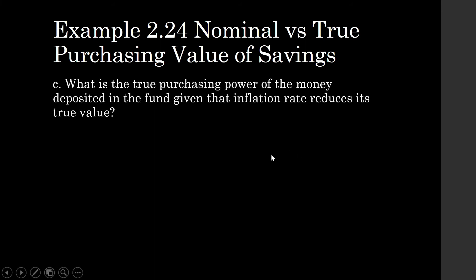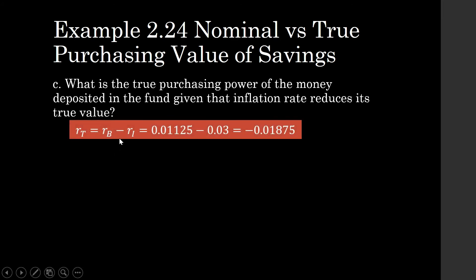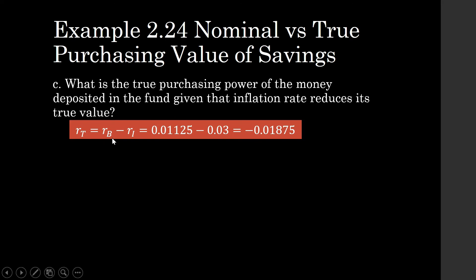What is the true purchasing power of the money deposited in the fund, given that the inflation rate reduces its true value? We have two rates here: the rate from the bank (R sub B), which adds value to your money, and the inflation rate, which removes value. So the true rate of increase in value of your money is the bank's interest rate minus the inflation rate, giving a true rate R sub T of negative 0.01875.